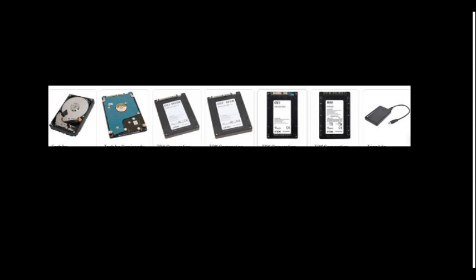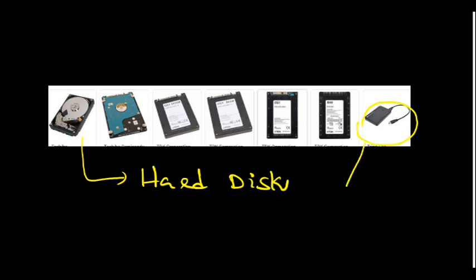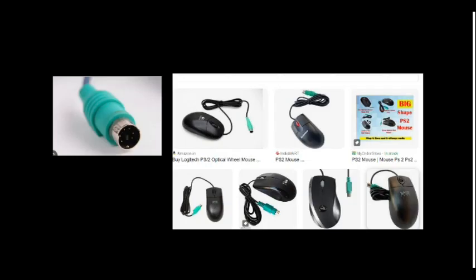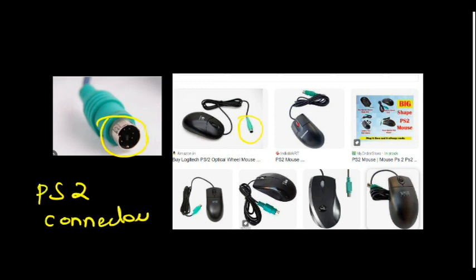This is the hard disk of a computer. Please check how to identify the computer motherboard and hard disk. This is also a hard disk — a portable hard disk — a solid-state portable hard disk, that is SSD. When you observe a hard disk, there will be storage mentioned in GB or terabyte. And this connector — our mouse and peripherals come with this kind of connector — this is called the PS2 connector.